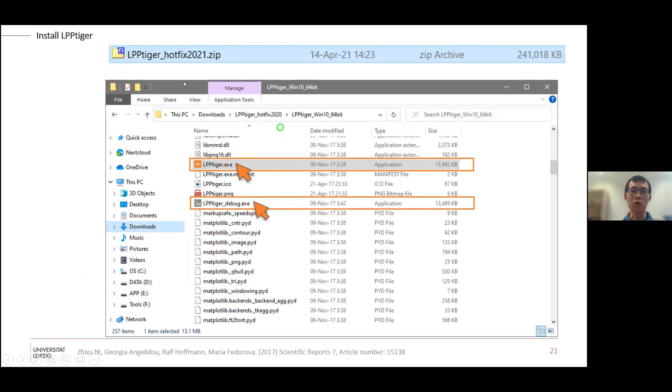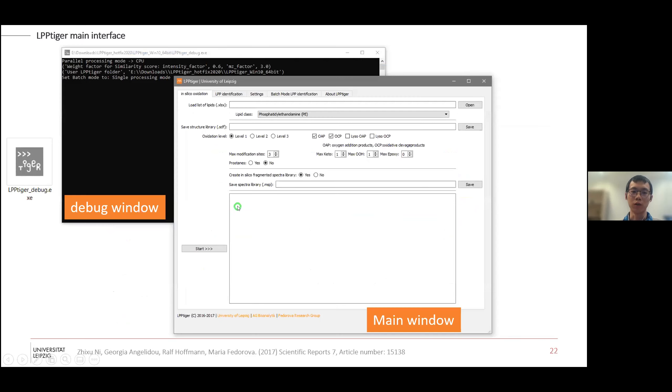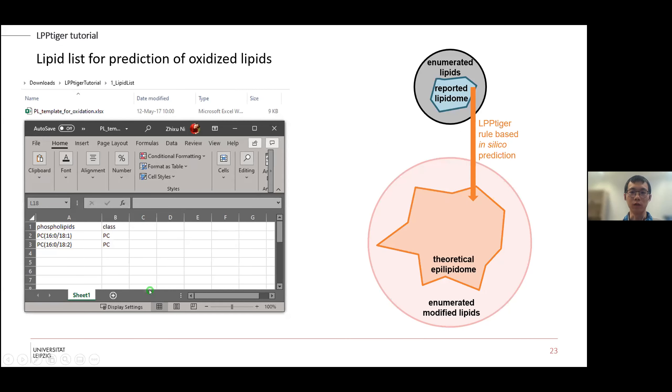If you download the software, you don't need to install. You just unzip it and then you can find two executables - the normal one and the debug mode. If you start the normal one, you get only the main window. If you start the debug mode, you will have an additional window to monitor what is going on behind the software.